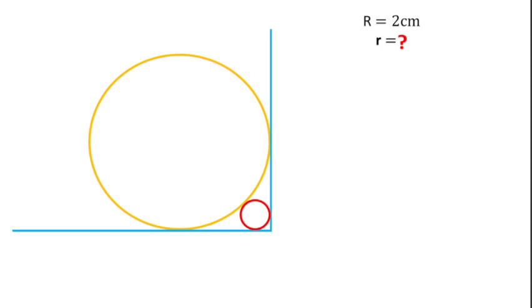Welcome to Definite Mind. In this question there are two circles and it is given the radius of the larger circle is 2 centimeters, and we have to find the radius of this smaller circle.